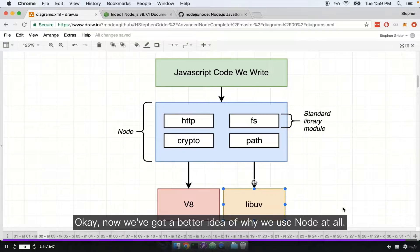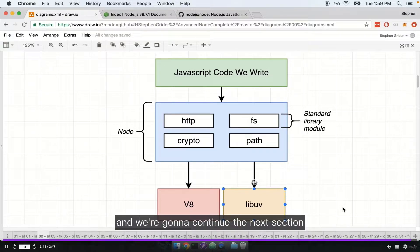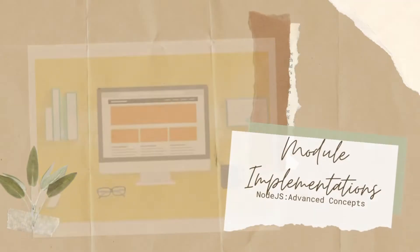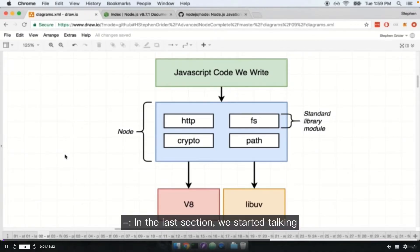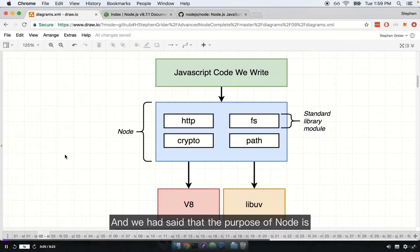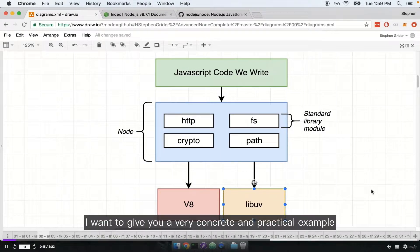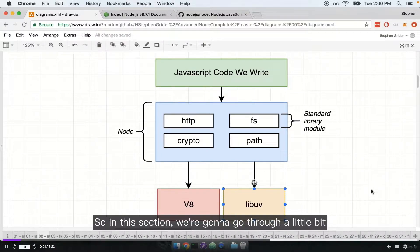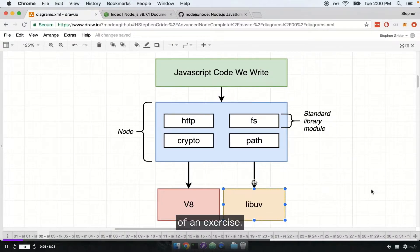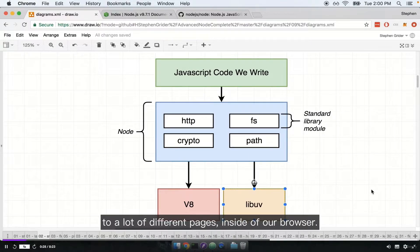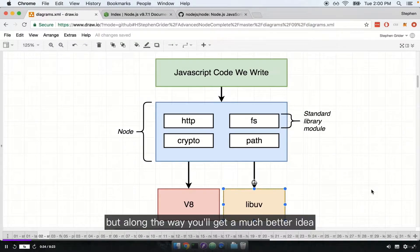Now that we've got a better idea of why we use Node at all, in the next section we're going to continue fleshing out this diagram. In the last section, we started talking about the internals of Node.js — the purpose of Node is to give us a nice consistent API for getting access to functionality ultimately implemented inside of V8 and libuv. I want to give you a very concrete and practical example of how this actually works behind the scenes, and we're going to go through a little exercise looking at some documentation and source code.